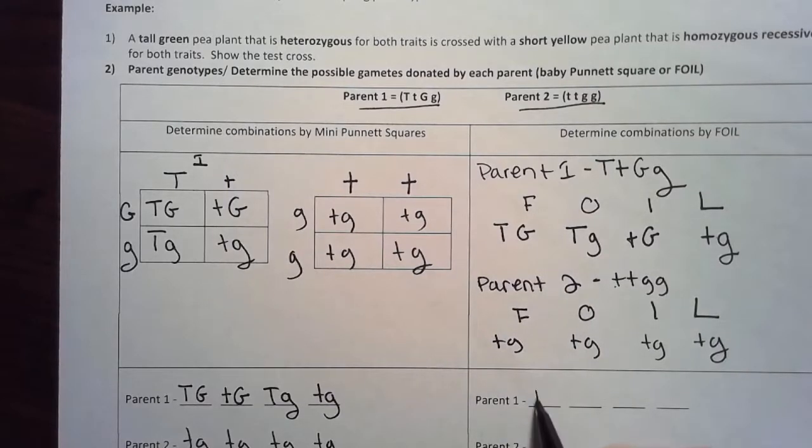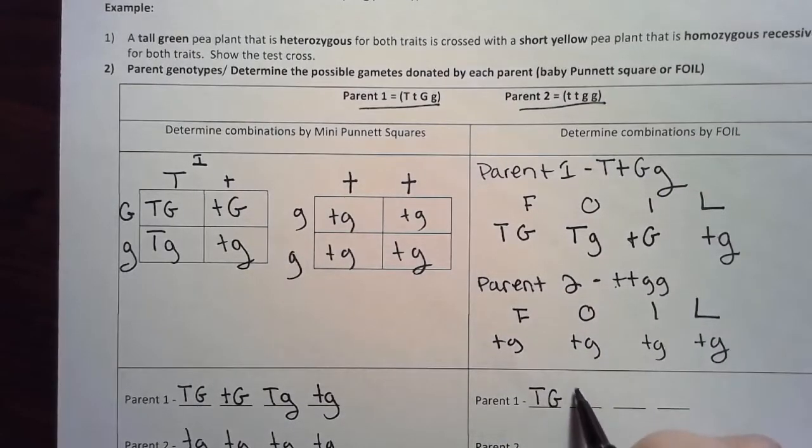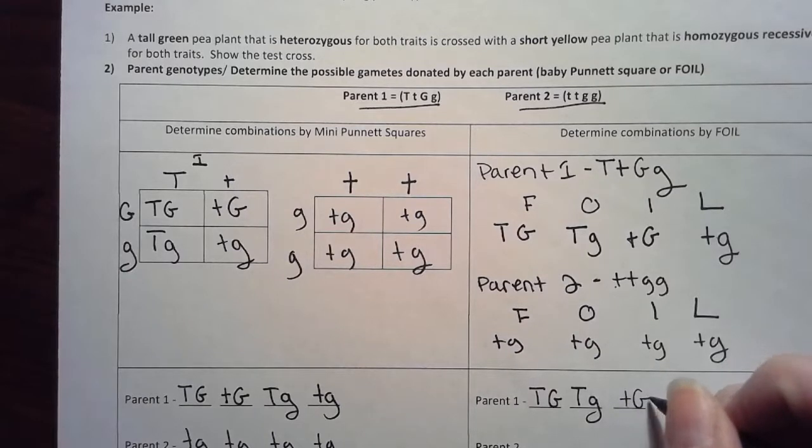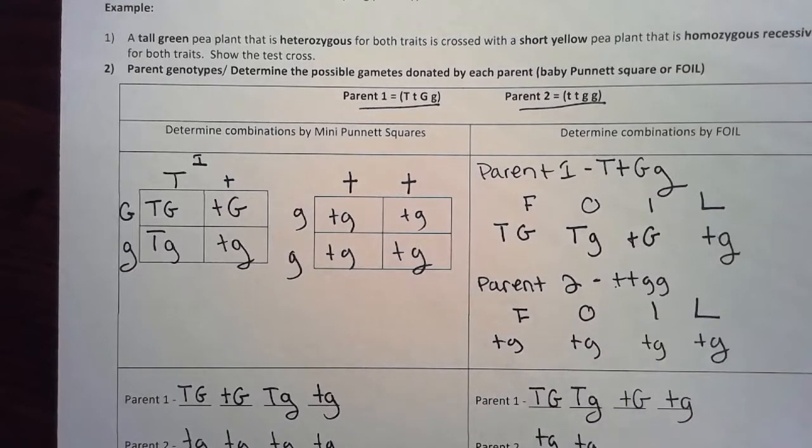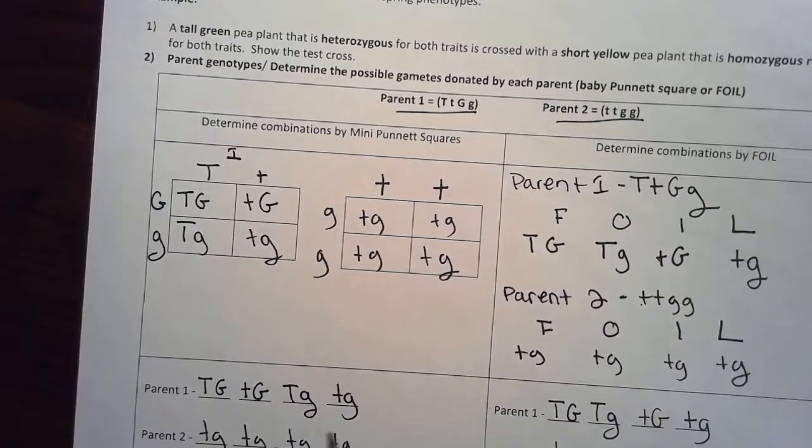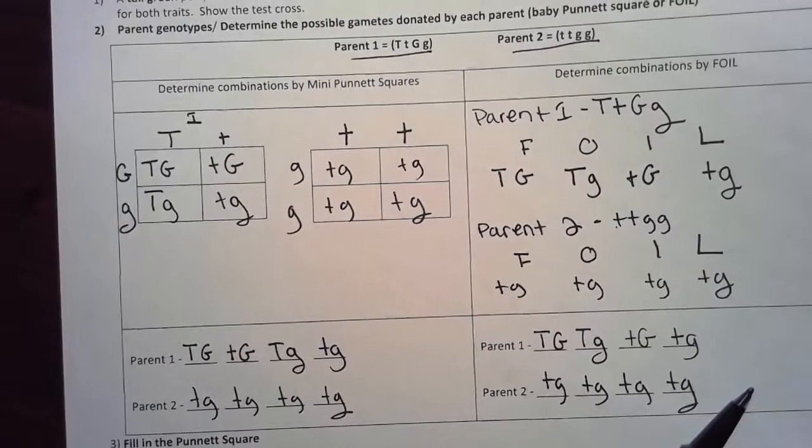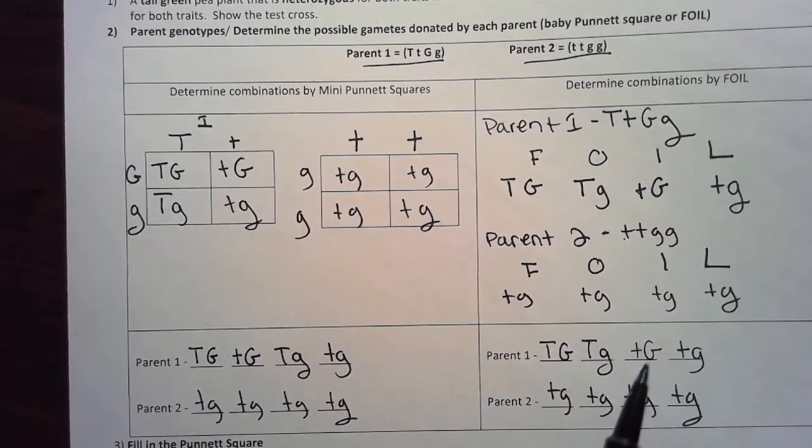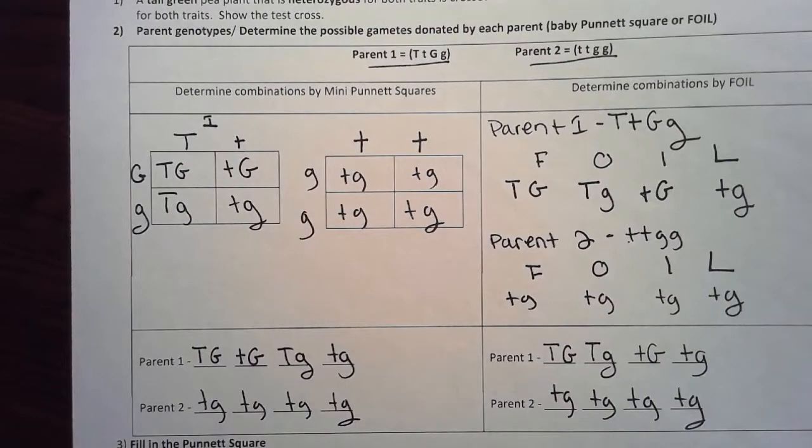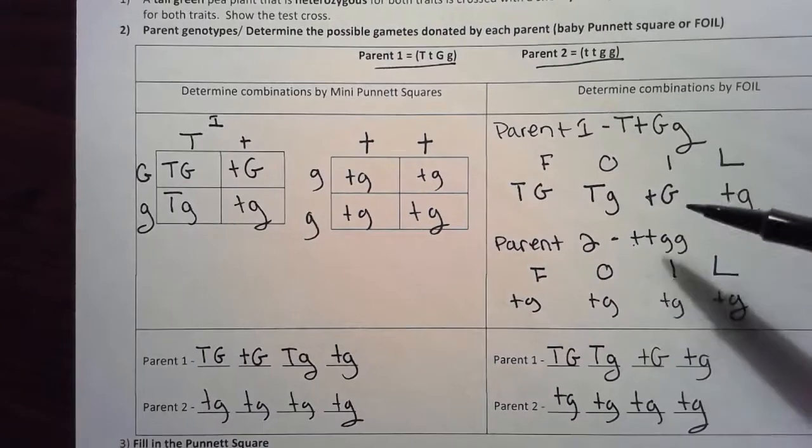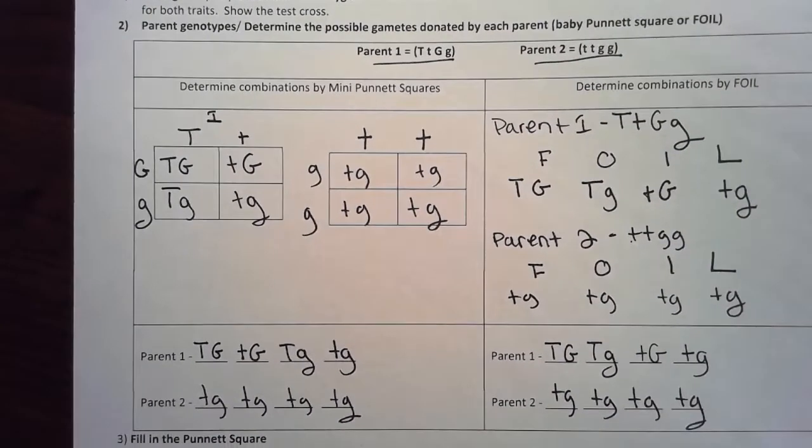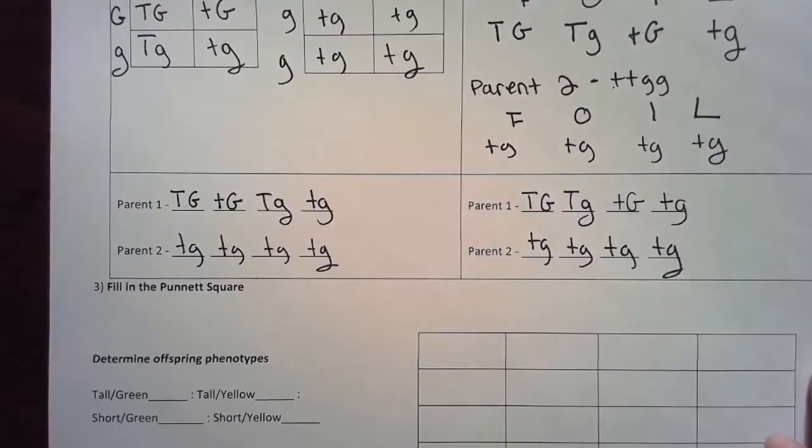Parent one I had these results for all of my gametes. And then for parent two I had this result for all of my possible gametes. And look at that, these are the exact same thing. I have all the same with each of my methods, so just pick the one that you like and go with that. If this made no sense to you, disregard it, forget that I ever told you anything.